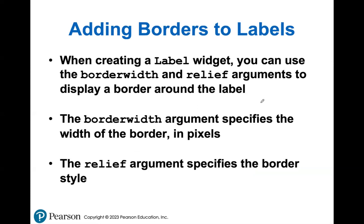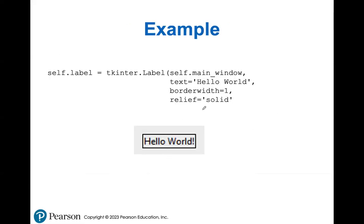You can also specify the border width and relief arguments whenever you're creating your labels. The border width specifies how big of a border you want your label to have from the walls of your window. The relief is just the border style. In this case we're using the type 'solid,' which will do a solid line around your text. With a border width of one, all the way around our text we have this solid black border.